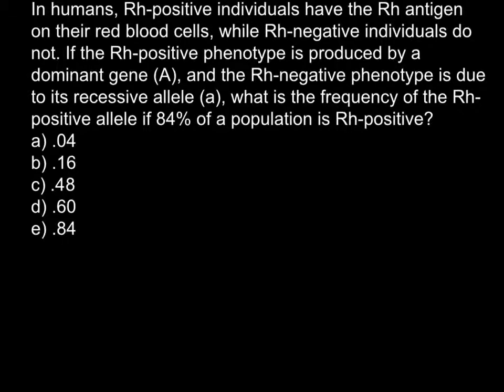Today's video is going to be about population genetics — about how to find allele frequency. Here is a problem: In humans, Rh-positive individuals have the Rh antigen on the red blood cells, while Rh-negative individuals do not. If the Rh-positive phenotype is produced by dominant gene A, and the Rh-negative phenotype is due to recessive allele small a, what is the frequency of the Rh-positive allele if 84% of the population is Rh-positive?